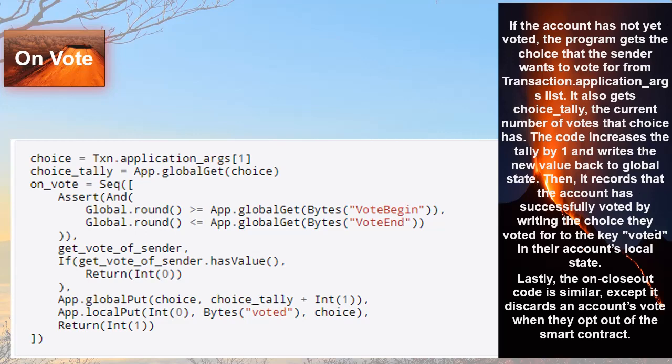Lastly, the on_closeout code is similar, except it discards an account's vote when they opt out of the smart contract.